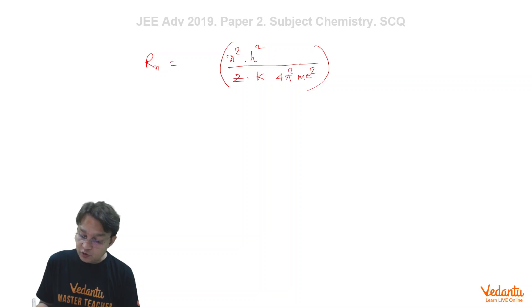And similarly, the kinetic energy which we have solved equals Z square into K square into 2 pi square M E raised to the power 4 upon n square H square, where K equals 1 upon 4 pi epsilon naught.